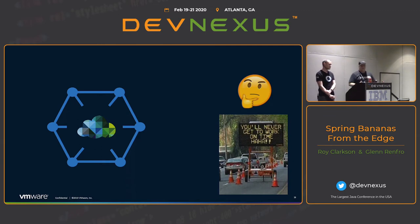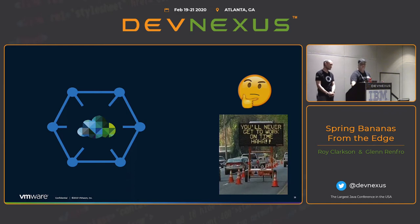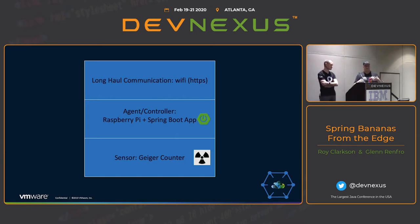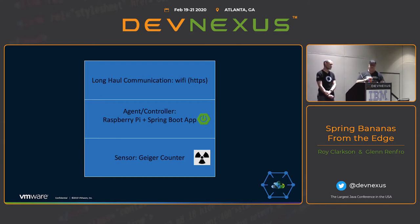Edge computing is sort of like the traditional thick versus thin client. In this demo, we're doing a bit of both. We're going to demo a thin client — which we're calling basic IoT — using an 8266 processor, and then a thick client which is the Raspberry Pi that will do more processing. An edge device is made up of four components: the sensor or actuator, the controller that receives and processes data, the agent that takes that data and sends it on a long haul, and the connection itself — in this case, Wi-Fi.